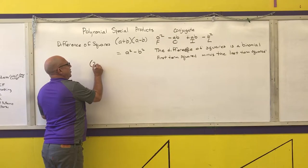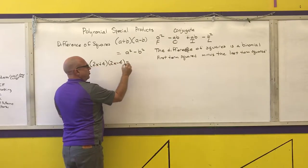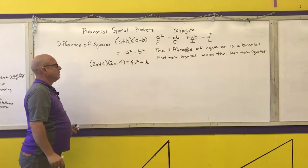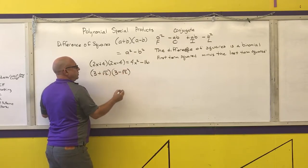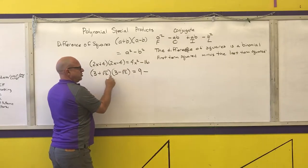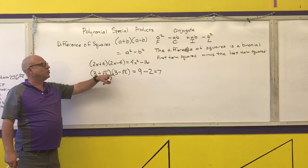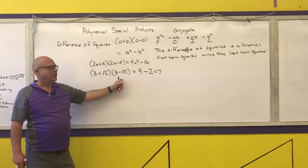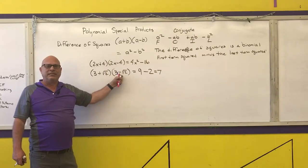It's always going to be the first term squared minus the last term squared. Example: 2x plus 4 times its conjugate 2x minus 4 equals 4x squared minus 16. Another example: 3 plus the square root of 2 times 3 minus the square root of 2 equals 9 minus 2, which is 7. This is a way to use the polynomial special pattern to simplify multiplication, and if you've already done simplifying radicals, you've seen this method for rationalizing denominators.